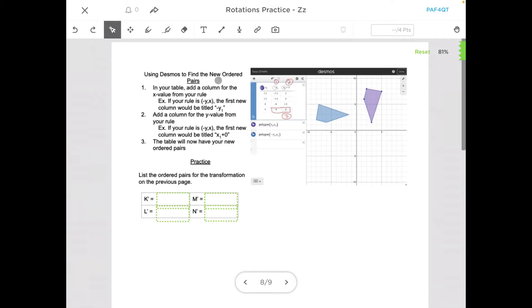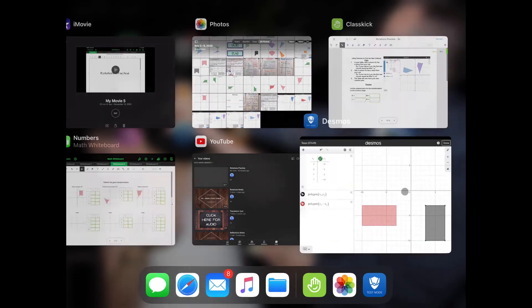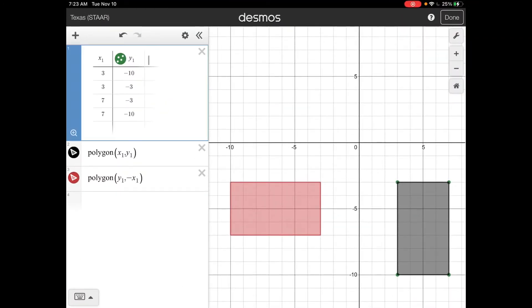Now the second page here is how to find the new ordered pairs. So to find those new ordered pairs, what you're going to do is you're going to tap into this next section and we're basically going to type in these same rules. And once we do that, it's going to give us those ordered pairs, those numbers.